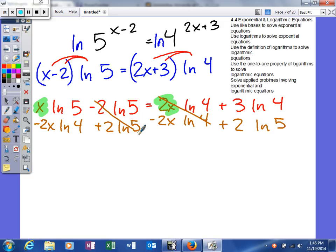So this will cancel. Over here I'm left with x natural log of 5 minus 2x natural log of 4. It equals 3 natural log of 4 plus 2 natural log of 5. Now it wouldn't have mattered if I had moved this over to this side and this over to this side. It will still give me the same answer in the long run. But I just chose to do it that way.